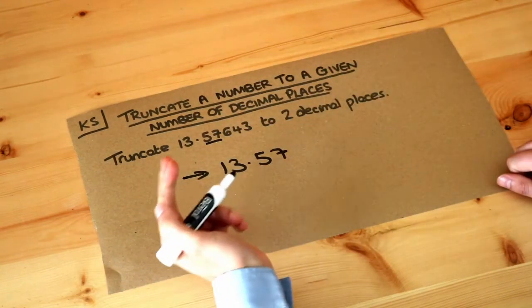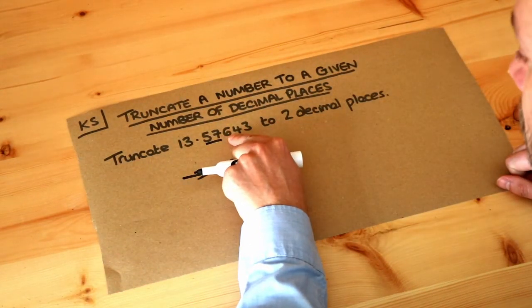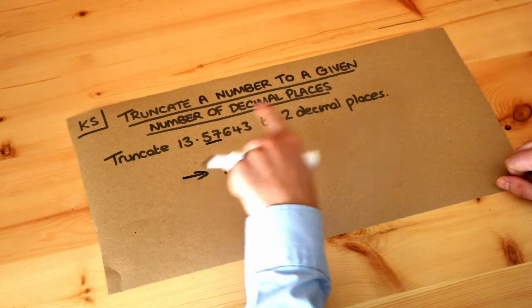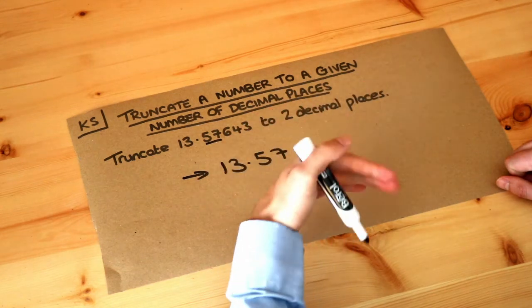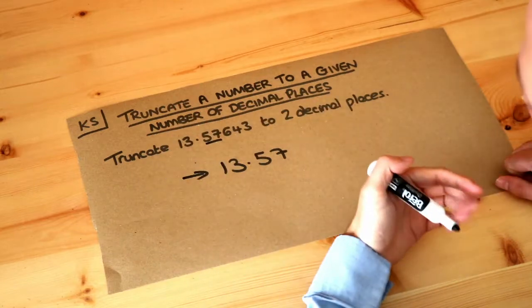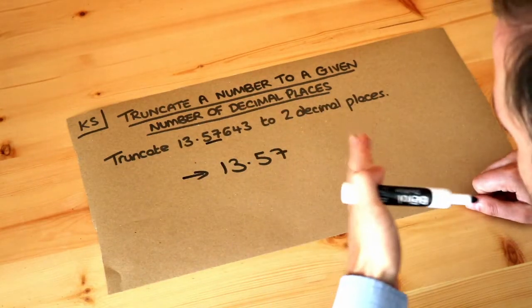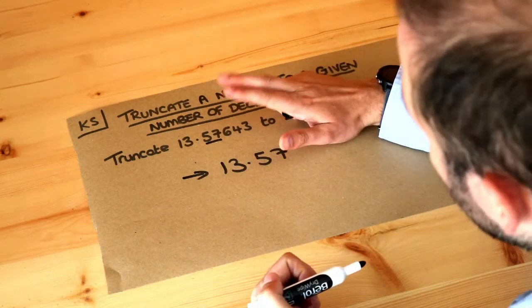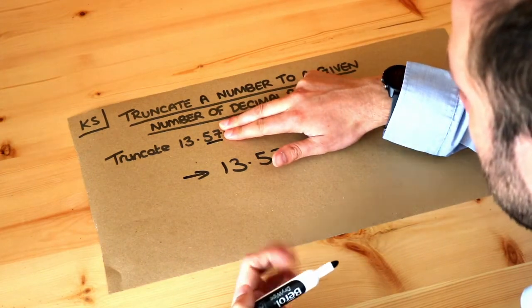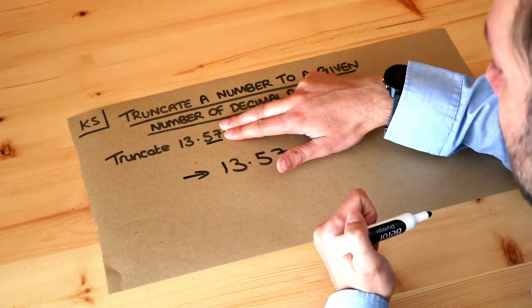With rounding, we would always check the digit after, and if that's 5 or above, that would go up to an 8. With truncating it's simpler because we just don't care about the digits after. Truncating means to cut off, so we just cut off everything after two decimal places and keep that number as it is.